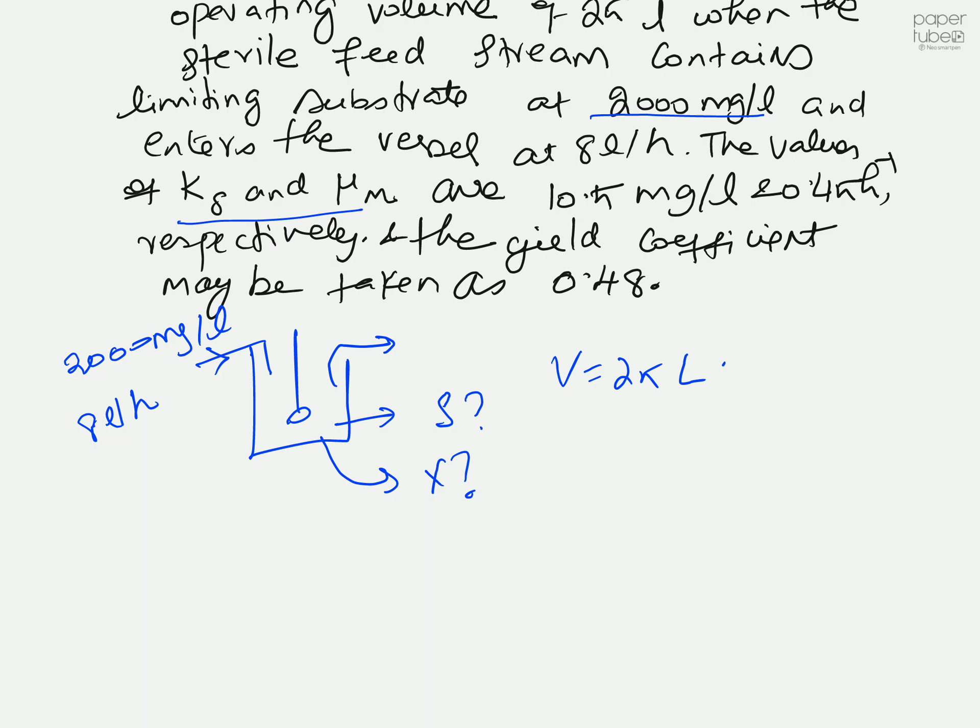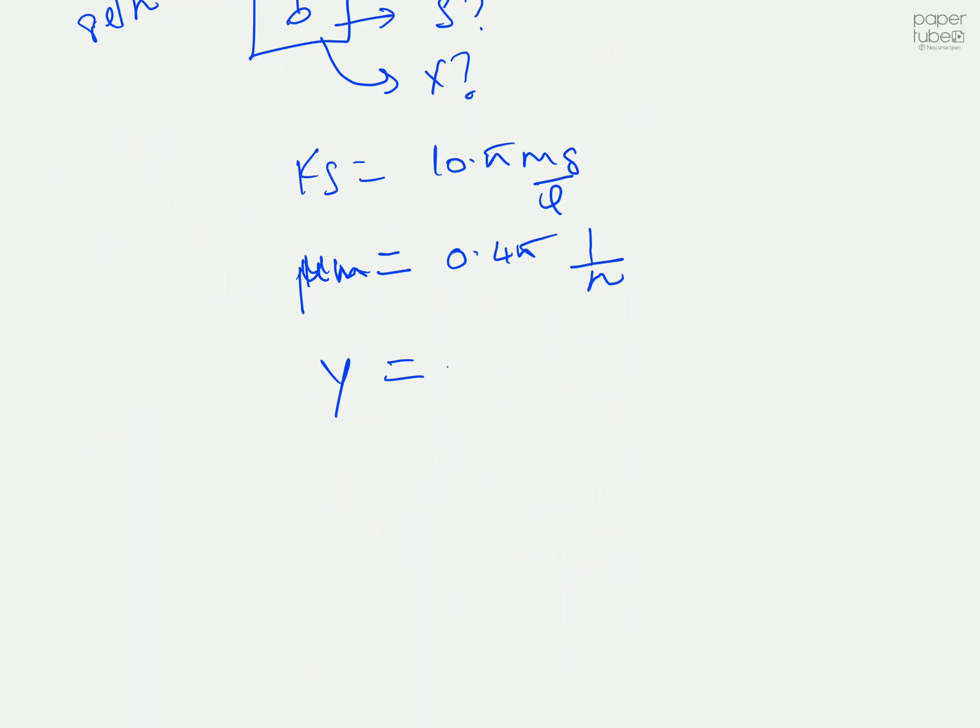I gave you some Monod constants ks and mu_m. These values are: ks equals 10.5 milligrams per liter and your specific growth rate mu_m equals 0.45 per hour. You can assume the yield coefficient is constant and equals 0.48.